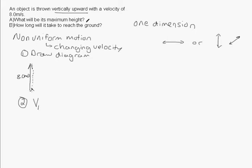After drawing the diagram, we write down all of our knowns. We know the initial velocity equals positive 8.0 meters per second, because we're saying upward is positive. We also know the final velocity — because the object goes up and stops at the top before coming back down, the final velocity is 0 meters per second. The height, which is displacement, is our unknown.